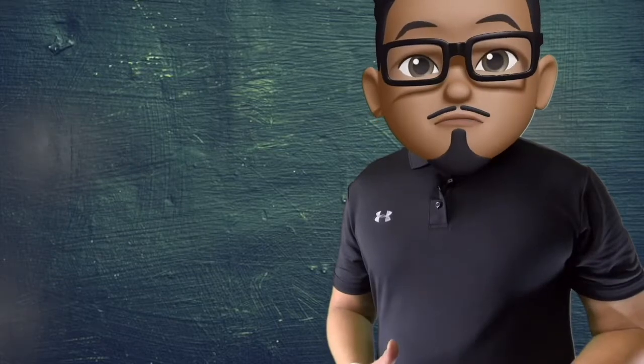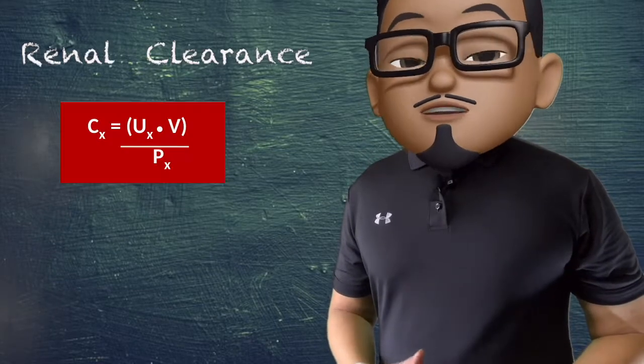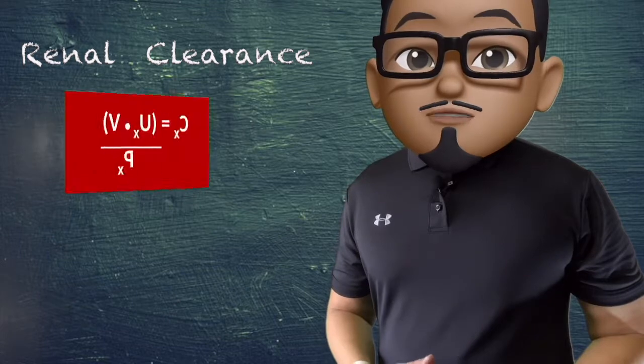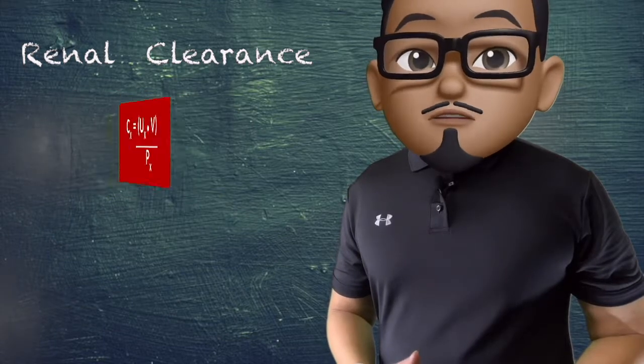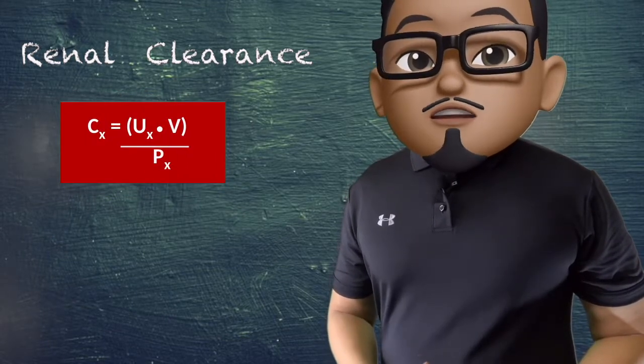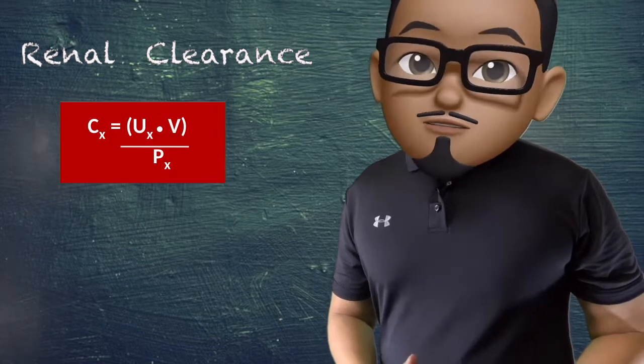Renal clearance (CX) of a given substance is the ratio of the renal excretion rate — which is UX times the volume per minute of the substance — to its concentration in the blood plasma (PX). In other words, it is the volume of plasma from which the substance is completely cleared per unit time, and its unit is usually in ml per minute.